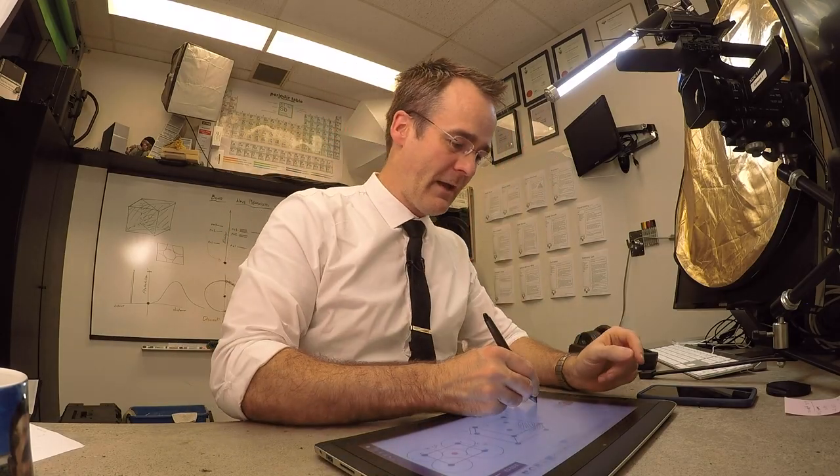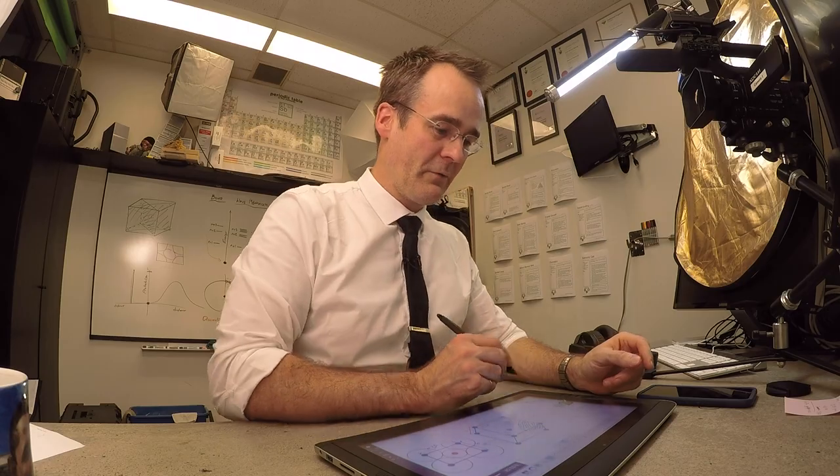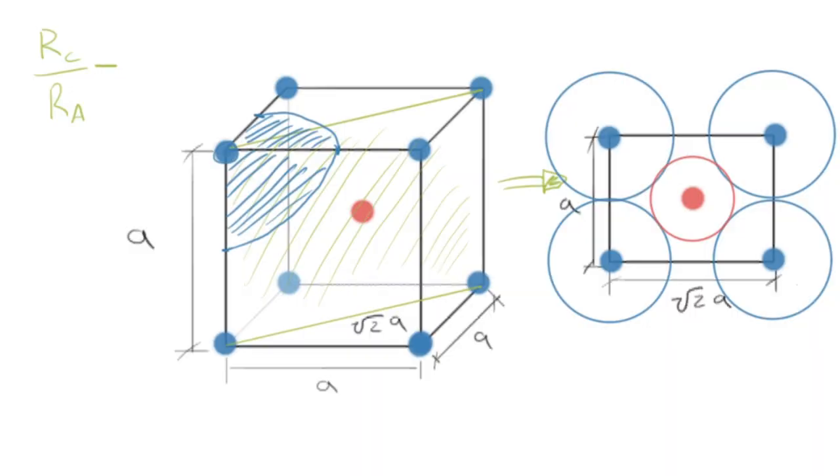So that's the critical size or critical value of this ratio for RC to RA. And if we look at that, we can perhaps see, make a best guess at what it might be.